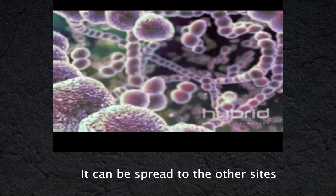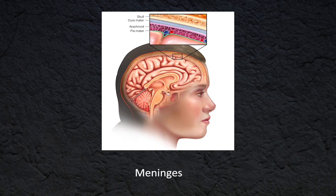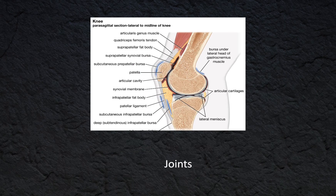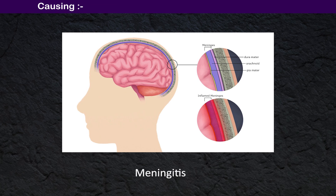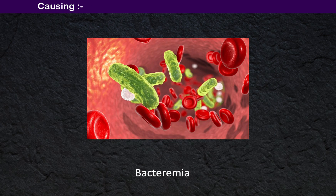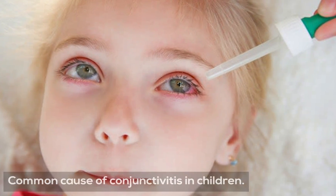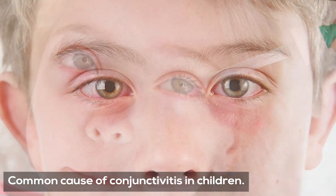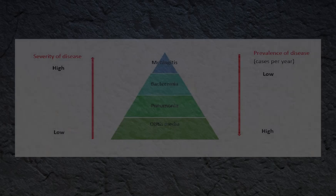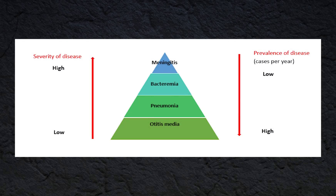However, it can be spread to other sites like the meninges, joints, peritoneum, and endocardium, causing meningitis, pneumonia, and bacteremia. Moreover, S. pneumoniae is a common cause of conjunctivitis in children. There is a comparison of severity and prevalence of some pneumococcal infections in children in the United States.